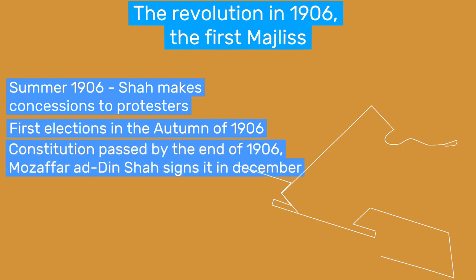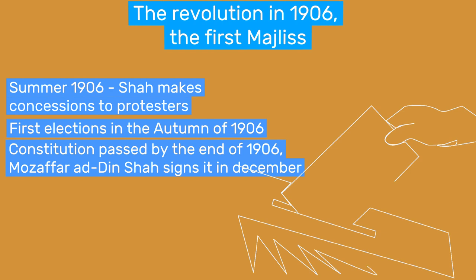The constitution introduced the following: voting rights were granted to men above the age of 25 whose net worth was above a baseline value. 156 members were present in the parliament. Tehran was over-represented with 60 seats, while entire provinces had between 6 and 12 seats. A cabinet of ministers headed by a prime minister would be elected from agreements between the Majlis and the Shah — especially in the first Majlis, the cabinet would be dismissed every few months. Elections were held for the Majlis every two years.